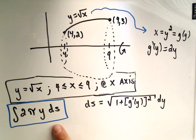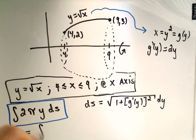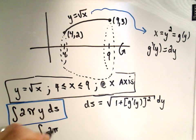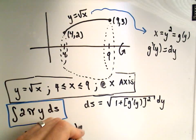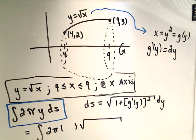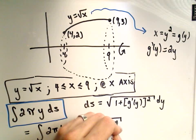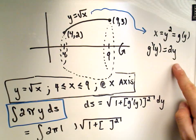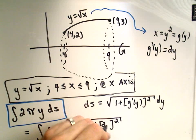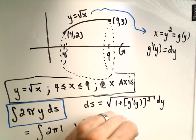So now if I fill in my formula, it says we're going to get the integral of 2 pi times, okay, so let me fill in my ds part first. It says we get 1 plus the derivative, all squared. Well, we just figured out what the derivative was. It was 2y. I need to drop my dy in there.